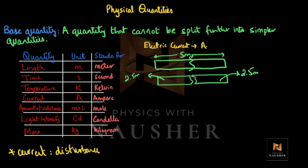Now if you split it further, you get 1.25 meters. You can keep splitting, but the unit at the end always remains meters. So remember: if the end unit remains the same after splitting, that quantity is a base quantity.